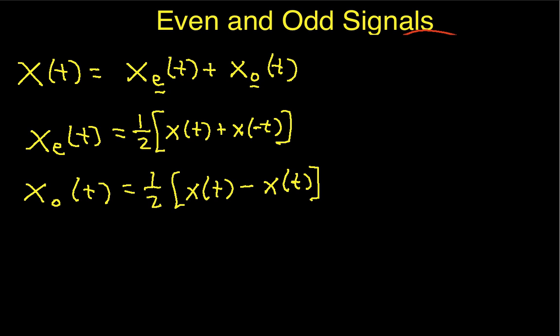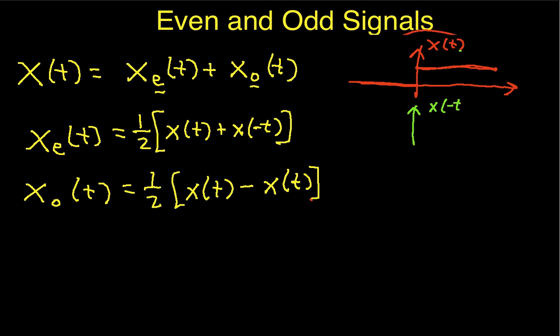Let's go through an example — this will probably make best sense if we go straight to it. Suppose that x(t) is a unit step function. The unit step function is 0 for values of t less than 0, and 1 for values of t greater than 0. So now I need to find x sub e, the even part of the signal. I do that by considering x(t) and then time-reversing the signal: x(−t), which consists of flipping the signal about the line t equals 0, so x(−t) looks like the mirror image.